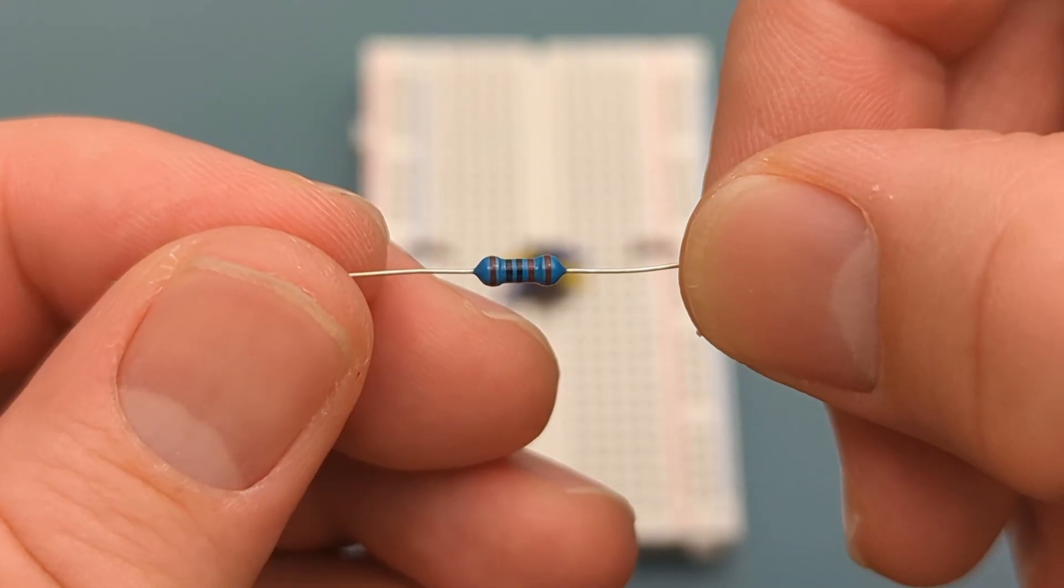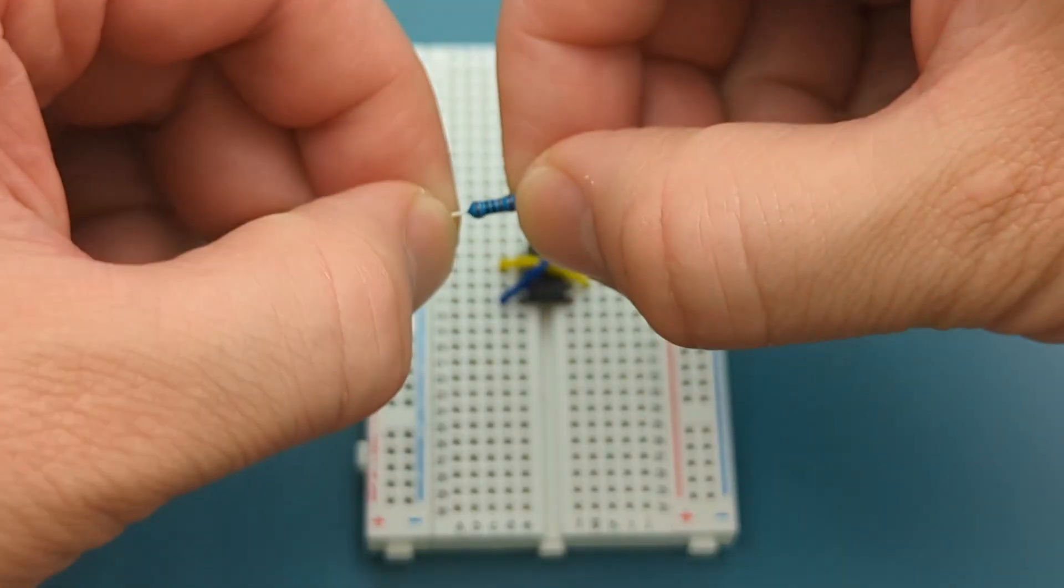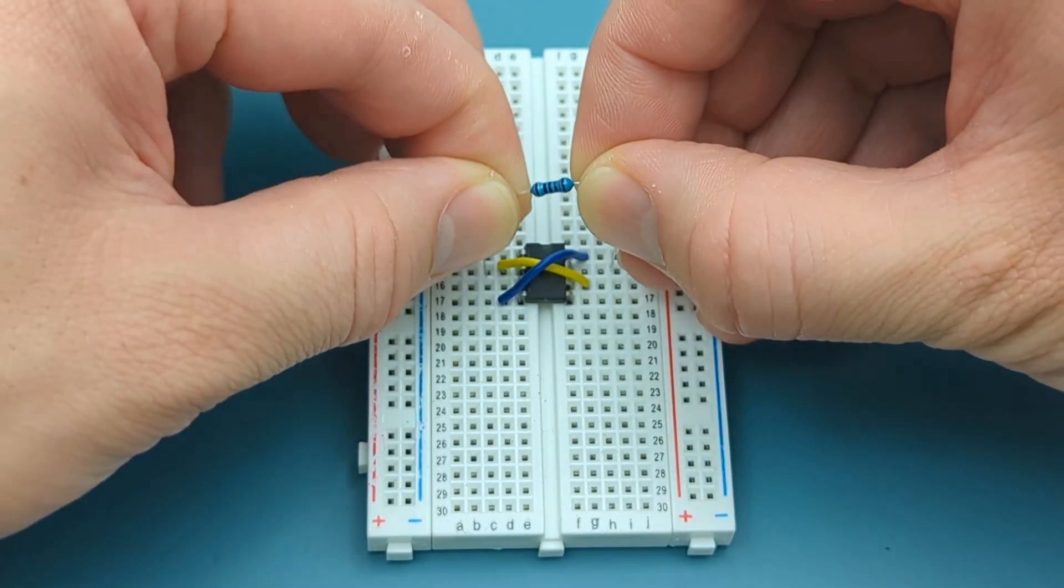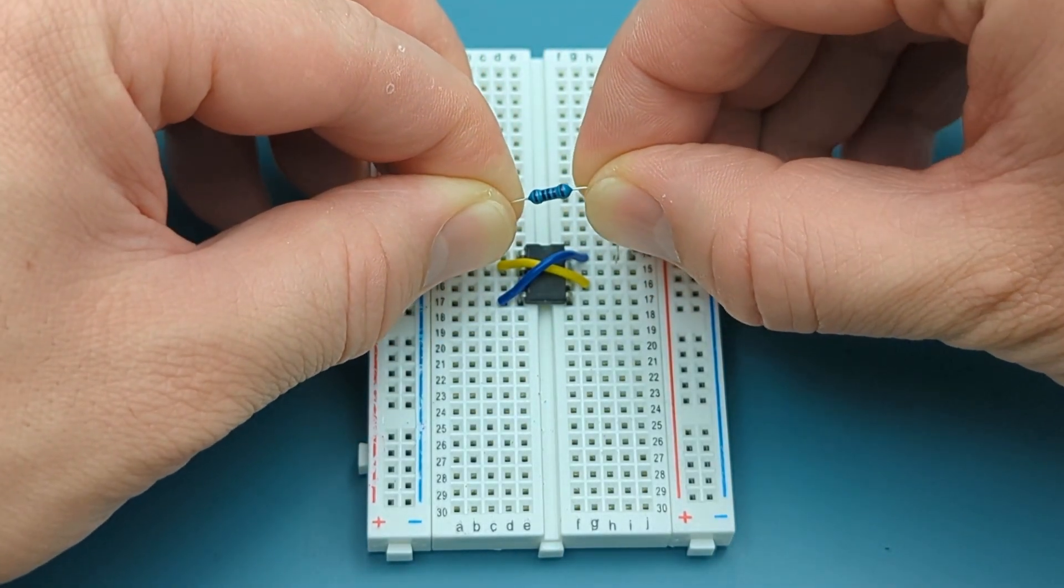Bend the ends of a 1000 ohm resistor. Insert the 1000 ohm resistor into pin 2 or trigger and pin 7 or discharge.